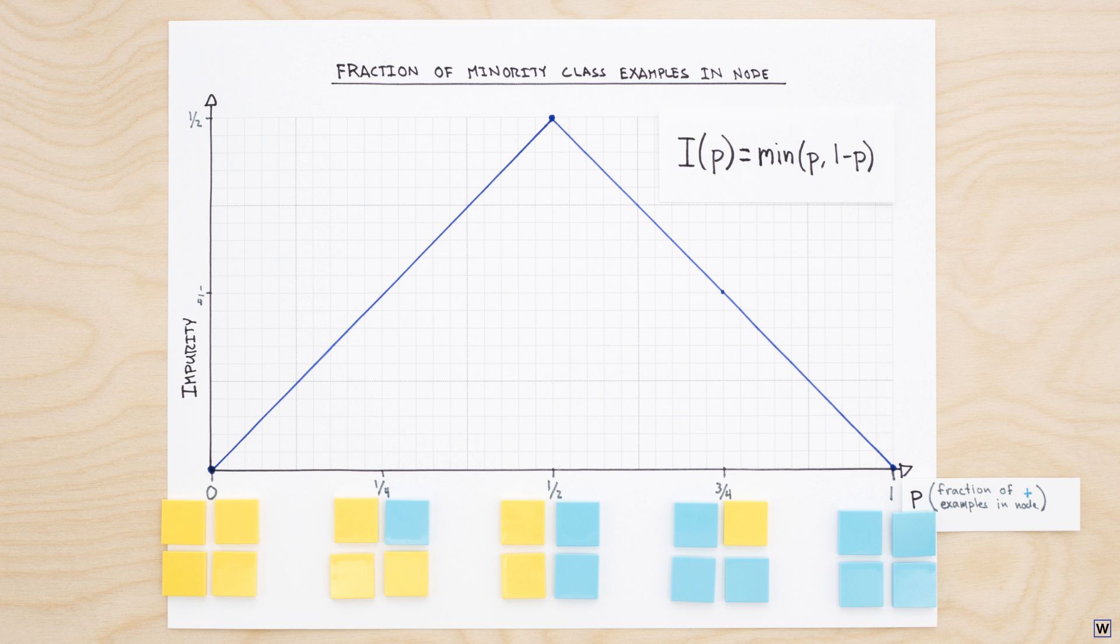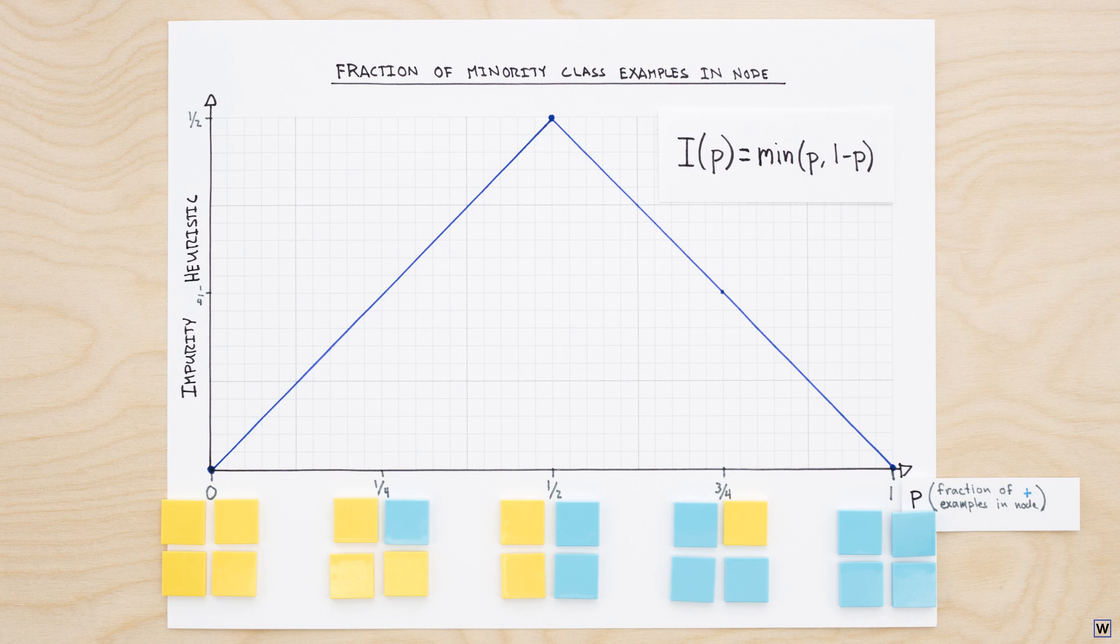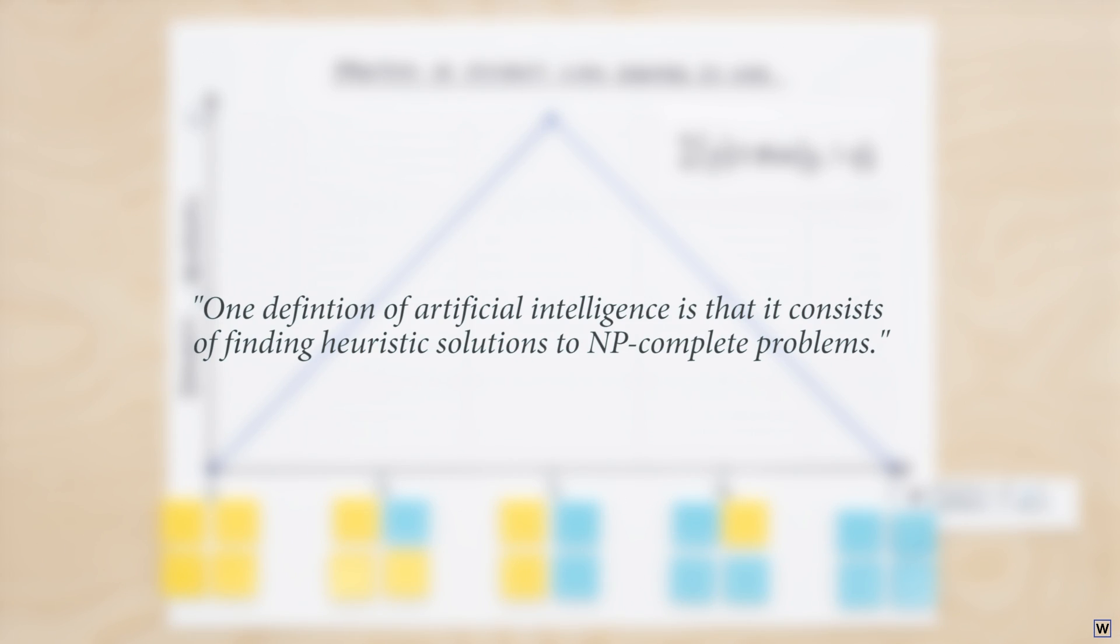Our minority class fraction measure of impurity, I of p, is a heuristic. A simple and practical, but perhaps not optimal, approach to our problem of finding the best split.